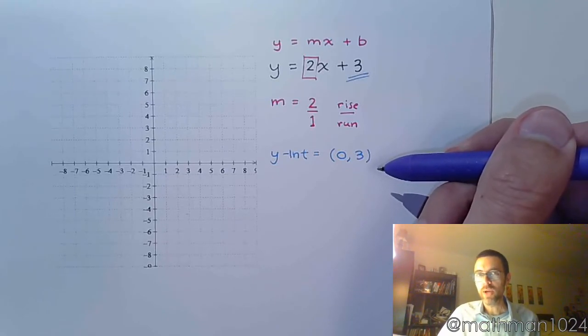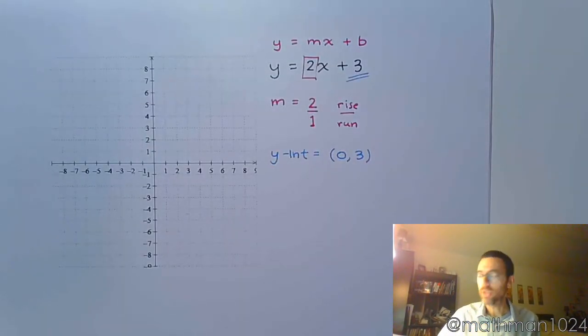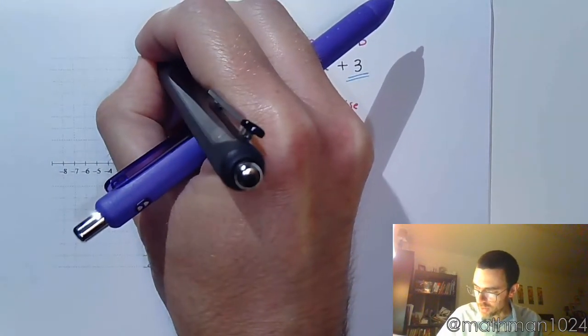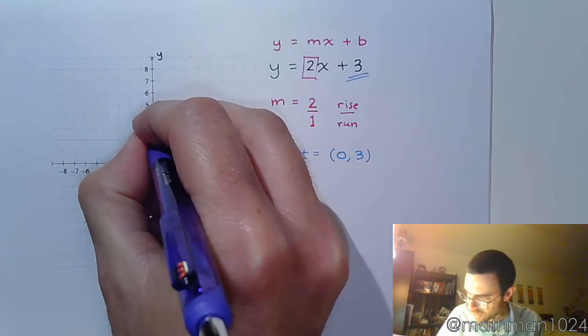Keep in mind that every y-intercept goes on the y-axis. If you forget which is which, make sure you label your axes. So this is x and this is y. The y-intercept is on the y-axis at (0, 3), right here.